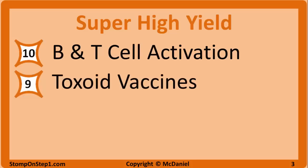Next up we have toxoid vaccines. You want to know the general definition, how toxoids are highly immunogenic and can be bound to carbohydrates to increase the immune response, and some common examples like tetanus and diphtheria.